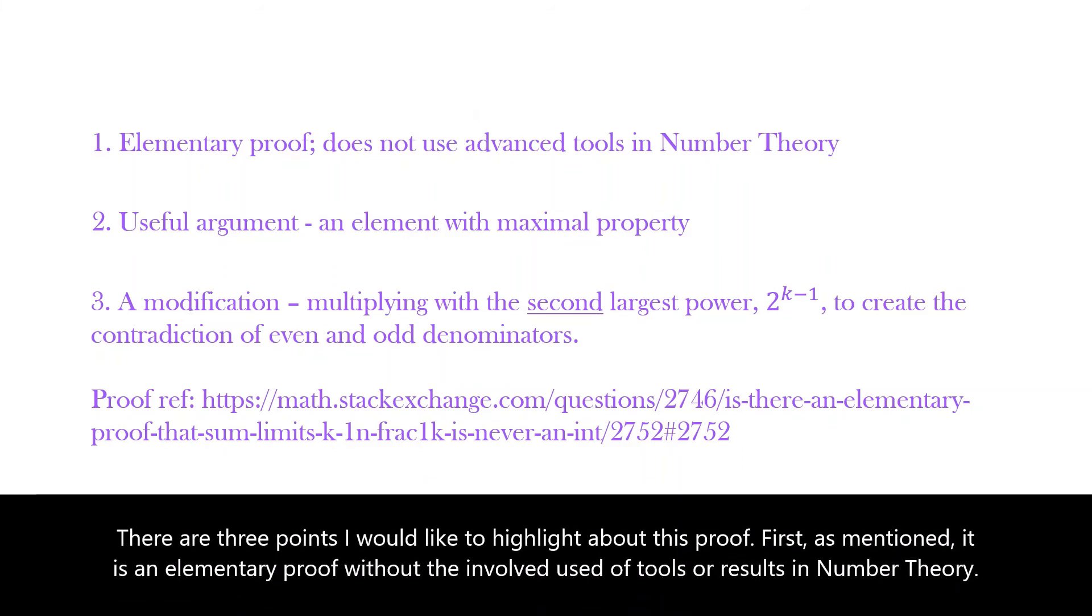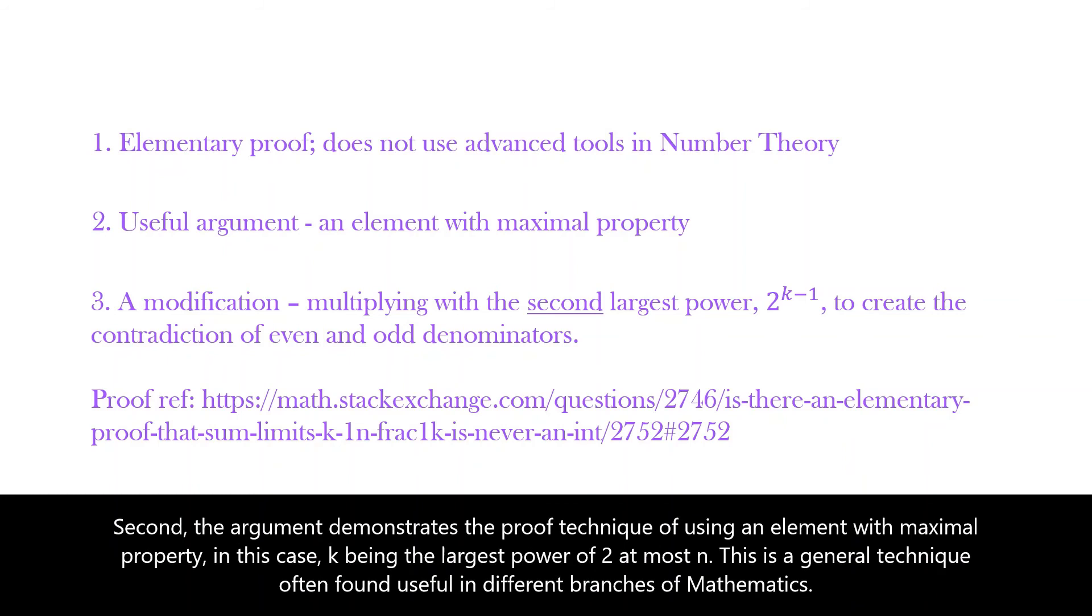There are three points I would like to highlight about this proof. First, as mentioned, it's an elementary proof without the involved use of tools or results in number theory. Second, the argument demonstrates the proof technique of using an element with maximal property, in this case k being the largest power of 2 at most n. This is a general technique often found useful in different branches of mathematics.